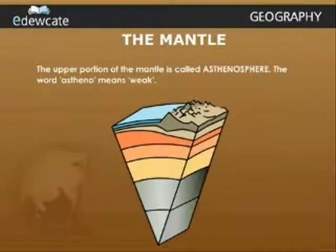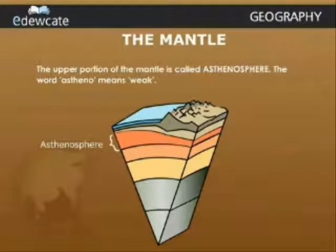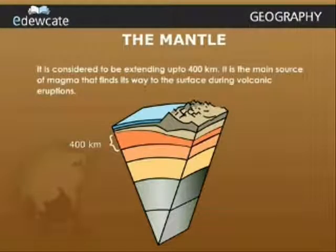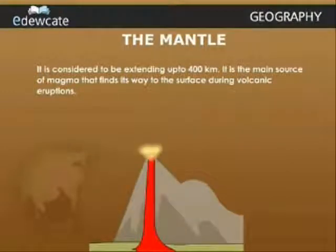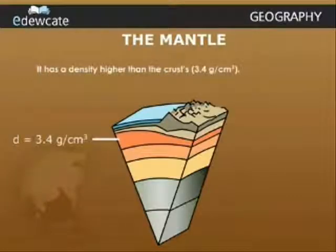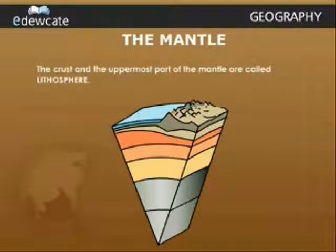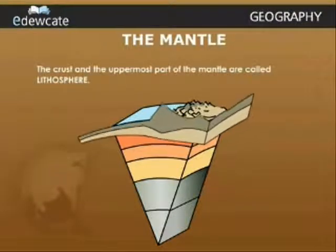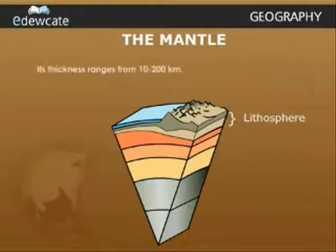The upper portion of the mantle is called the asthenosphere. The word 'astheno' means weak. It is considered to extend up to 400 km inside the Earth. It is the main source of magma that finds its way to the surface during volcanic eruptions. It has a density higher than the crust, around 3.4 g per cm³. The crust and the uppermost part of the mantle are called the lithosphere, with thickness ranging from 10 to 200 km.